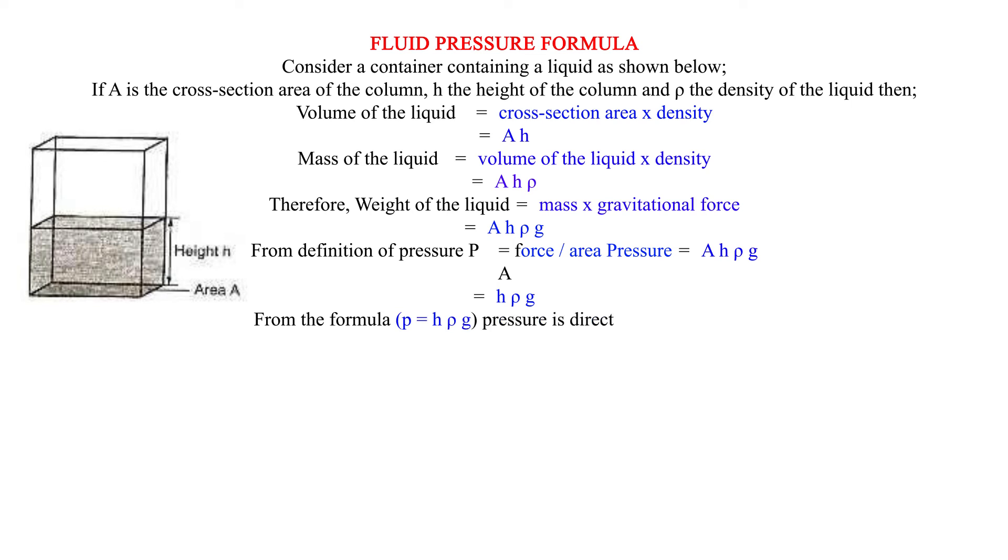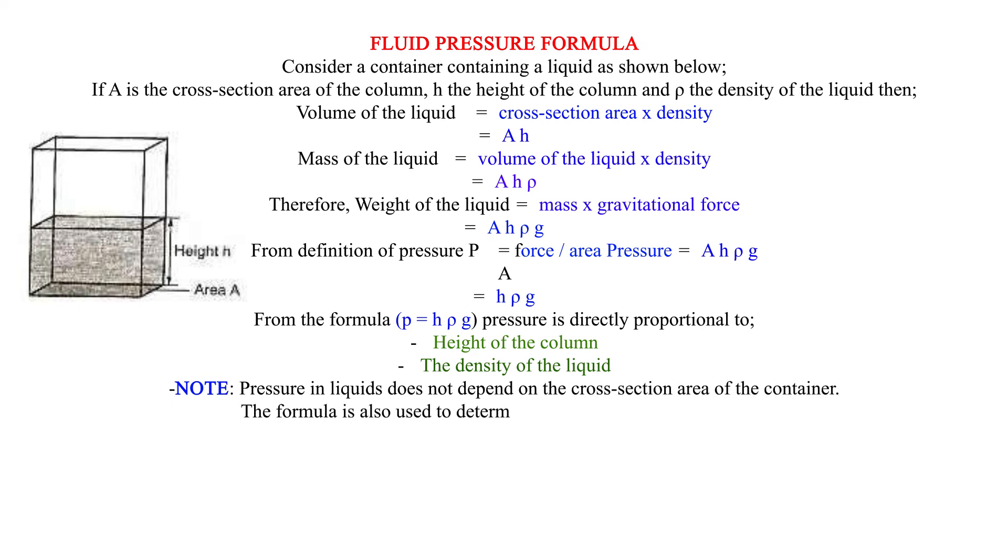Pressure is directly proportional to the height of the column and the density of the liquid. Note: Pressure in liquids does not depend on the cross-sectional area of the container. This formula is also used to determine pressure due to a gas column.